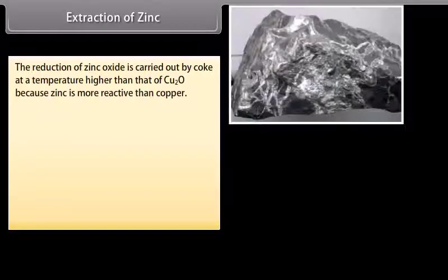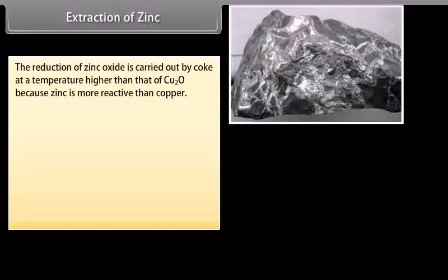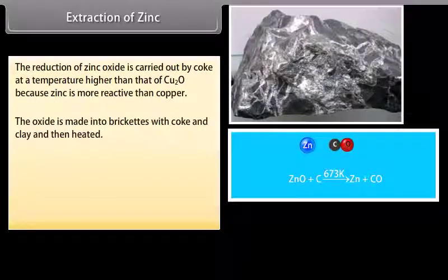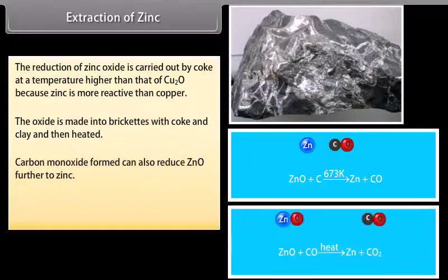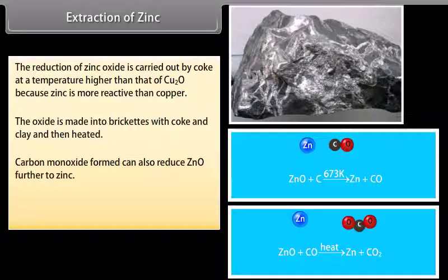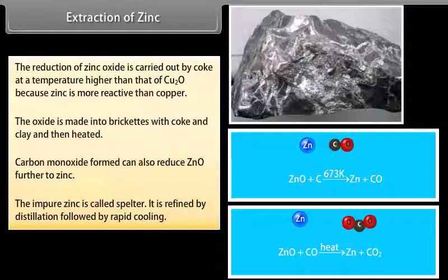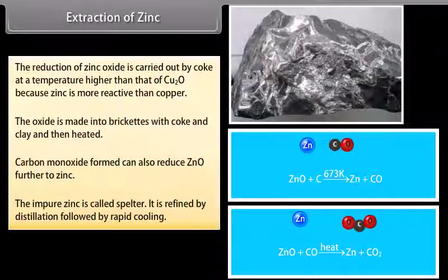Extraction of zinc. The reduction of zinc oxide is carried out by coke at a temperature higher than that of Cu2O because zinc is more reactive than copper. The oxide is made into briquettes with coke and clay and then heated. Carbon monoxide formed can also reduce ZnO further to zinc. The impure zinc is called spelter. It is refined by distillation followed by rapid cooling.